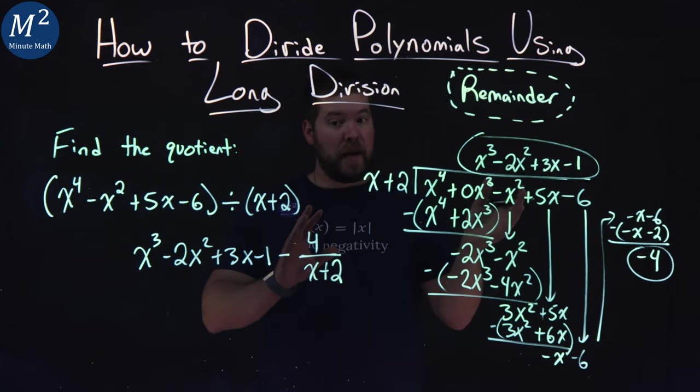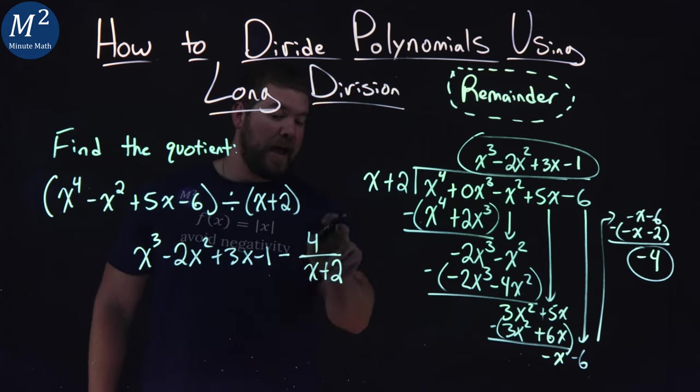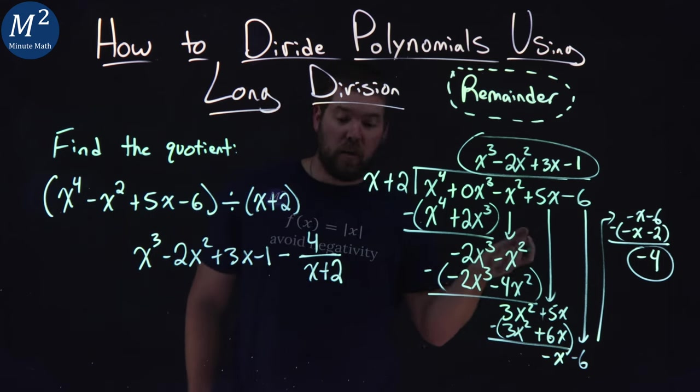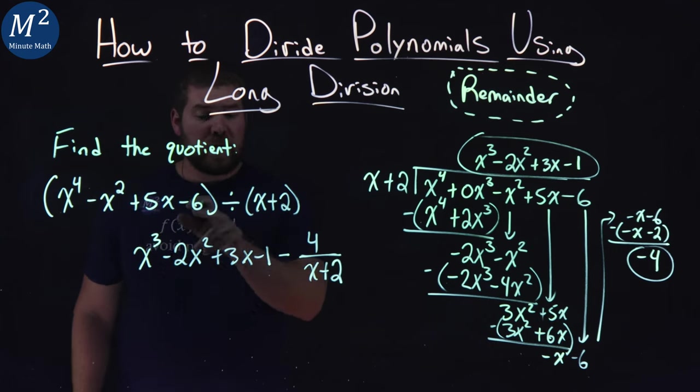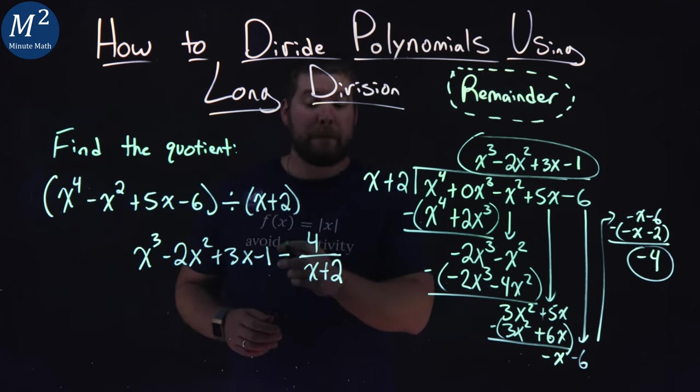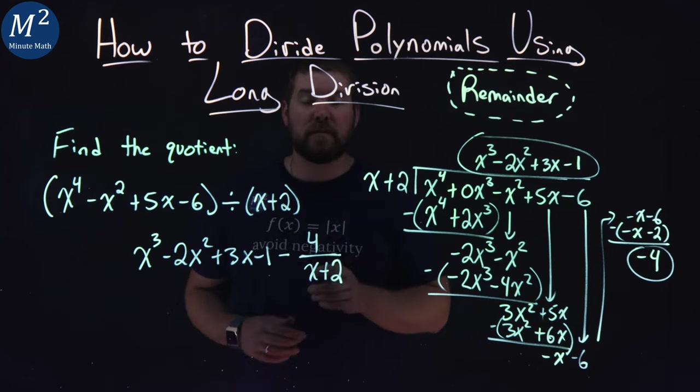Our negative 4 is the remainder, so we still need to divide that last bit, but we're not going to keep going. And there we have it. Our answer: x to the third minus 2x squared plus 3x minus 1 minus 4 over x plus 2.